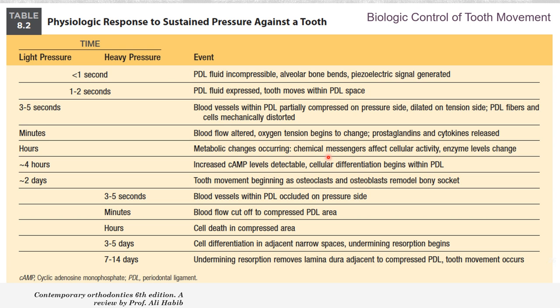After more than four hours, cellular differentiation begins within the PDL — osteoblasts on the tension side and osteoclasts on the compression side. After two days, we start to see tooth movement as osteoclasts and osteoblasts remodel the socket. This is the advantage of light pressure: teeth start to move within two days.